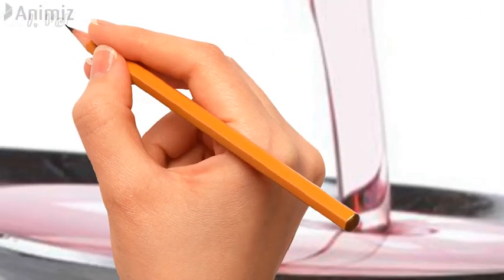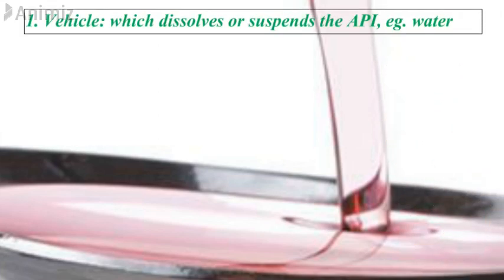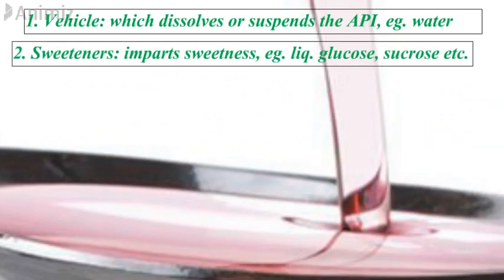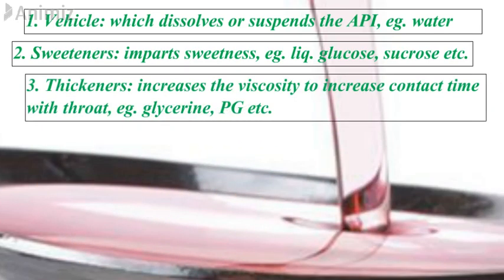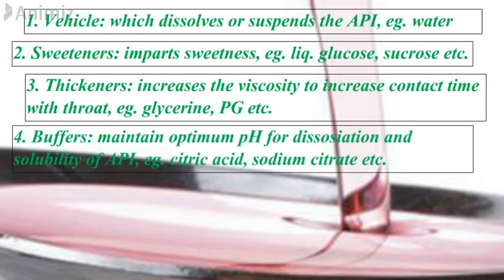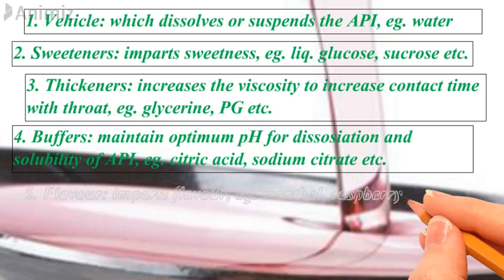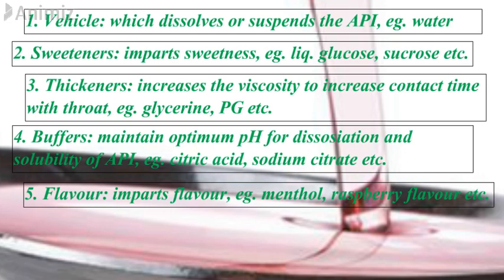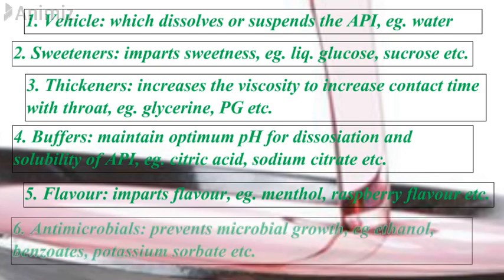Then we have liquid oral dosage forms like syrups. The vehicle dissolves or suspends the API — in most cases it is water. A sweetening agent imparts sweetness, like liquid glucose or sucrose. A thickening agent increases viscosity and contact time with the throat — examples are glycerine and propylene glycol. Buffers maintain an optimum pH for dissolution and solubility of the API — examples are citric acid and sodium citrate. Flavors impart taste — examples are menthol and raspberry flavor. Since the vehicle is water, antimicrobial agents are added to prevent microbial growth — examples are ethanol, benzoates, and potassium sorbate.